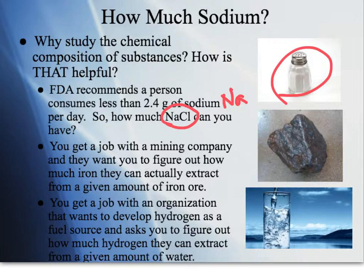Or, say you get a job with a mining company and you need to figure out how much iron they can actually extract from a given amount of iron ore — again, we can use chemical composition and molar mass to figure that out. Or perhaps you get an environmental science degree and join an organization that wants to develop hydrogen as a fuel source, and they ask you to figure out how much hydrogen can be extracted from a given amount of water. You can use moles, molar mass, and stoichiometry to help you figure that out — it can actually be useful in real life.